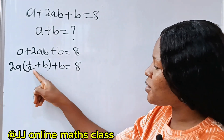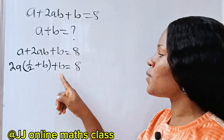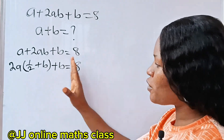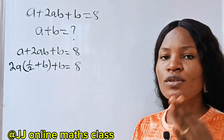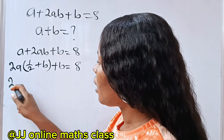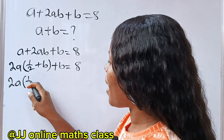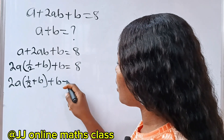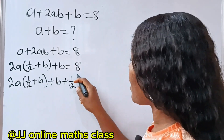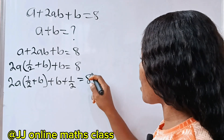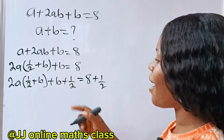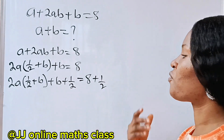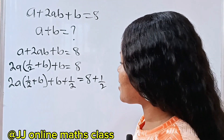Now I need to have something similar to the factor inside the bracket on this side as well. So let me add ½ to both sides of this equation. If I do that I will have 2a multiplied by (½ + b), plus b multiplied by ½, is equal to 8 plus ½.